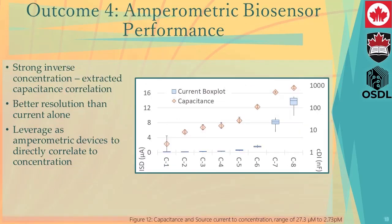Outcome 4 demonstrates the efficacy of using our biosensors as amperometric devices. Not only do we have an excellent inverse concentration-to-output current relationship, but when we extract the lumped capacitance term from our previously described models, we actually have an even stronger inverse concentration-to-CDI correlation, which has better resolution than current alone. This demonstrates that we can use our devices as amperometric biosensors in the future and will be able to directly correlate the extracted parameters to concentration.